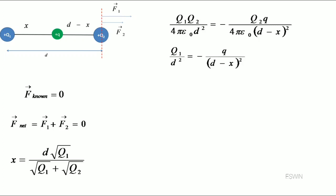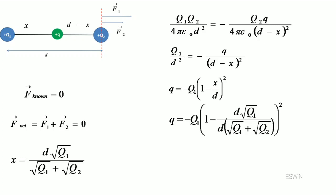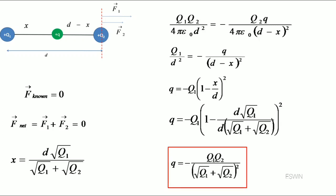Rearranging the terms, we arrive at the formula: q equals minus q1 times (1 minus x over d) squared. We have already found the value of x, so substituting it gives q equal to minus q1 times (1 minus d times root q1 divided by d times (root q1 plus root q2)) squared. After cancellation, we arrive at the final formula: q equals minus q1 q2 divided by (root q1 plus root q2) squared. This is the amount of charge that must be kept between two like charges such that the system will be in equilibrium.